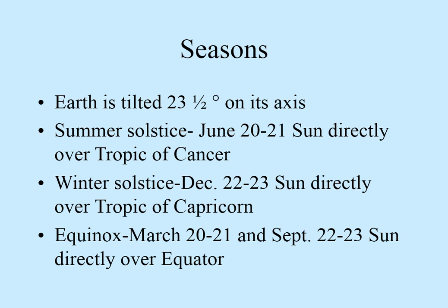We're tilted on our axis at 23 and a half degrees. Some important dates: June 20-21st or December 22-23rd are the summer and winter solstices — that's when the sun is directly over the Tropic of Cancer and the Tropic of Capricorn. The equinoxes, March 20-21 and September 22-23, are when the sun is directly over the equator.